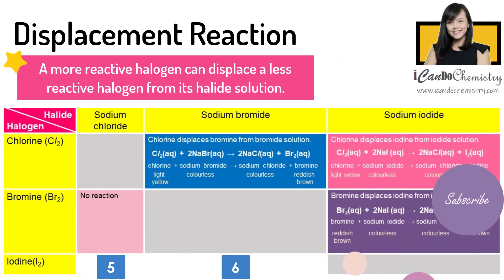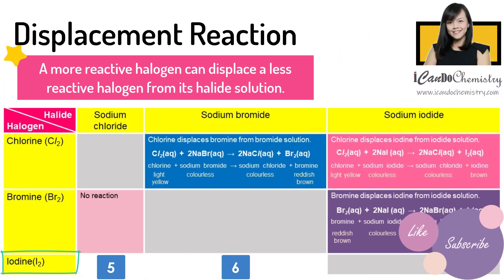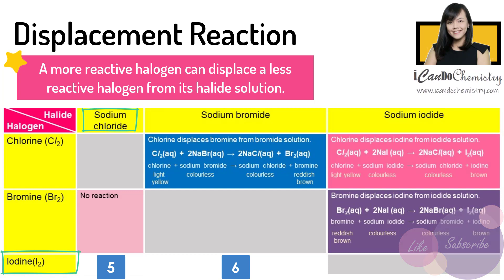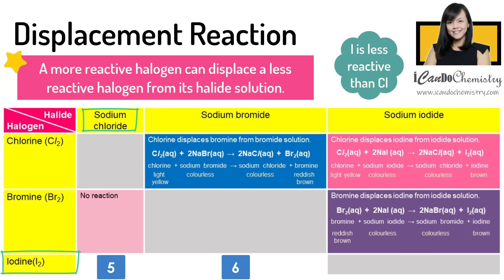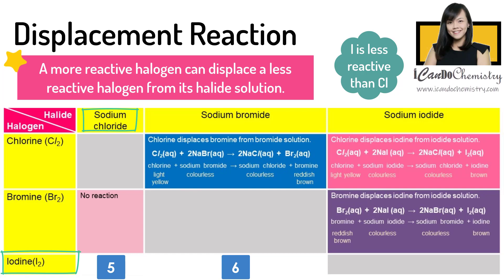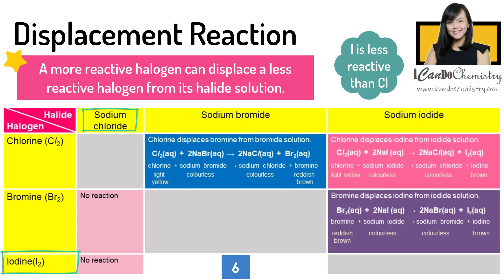Scenario five: we add aqueous iodine into chloride solution. Iodine is less reactive than chlorine, hence iodine will not be able to displace chlorine from chloride solution. Hence there is no reaction.